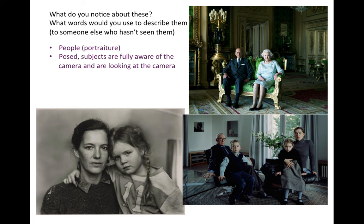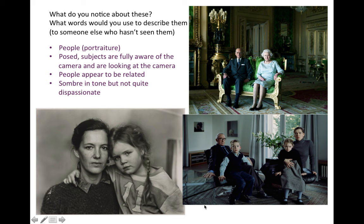People appear to be related. You know that these are the Queen and Prince Philip — they are related. This is a family; these two are mother and daughter as well. It's very sombre in tone — they are not in the midst of a celebration, they are not joyful. But at the same time, you cannot call them dispassionate. They are holding quite strong feelings. Look at this little girl — the Queen, although she's not beaming, she's definitely not looking that neutral either. So I wouldn't consider it to be dispassionate.